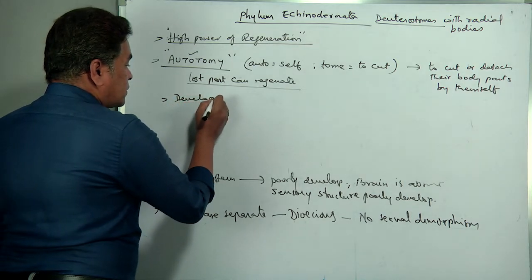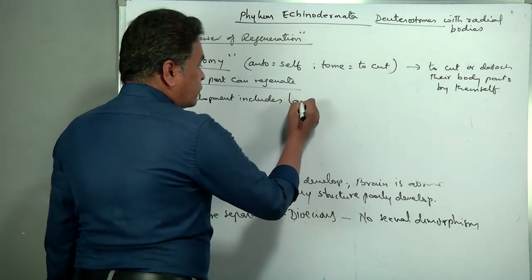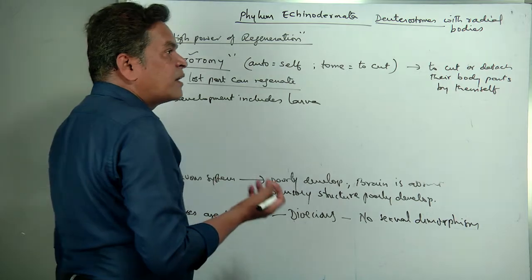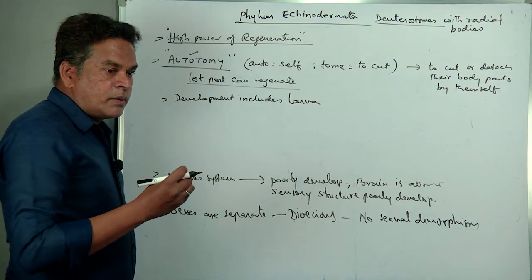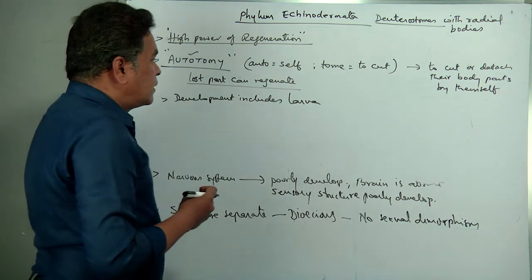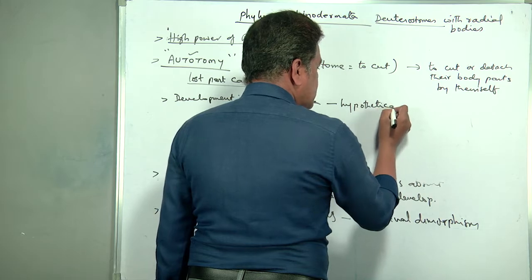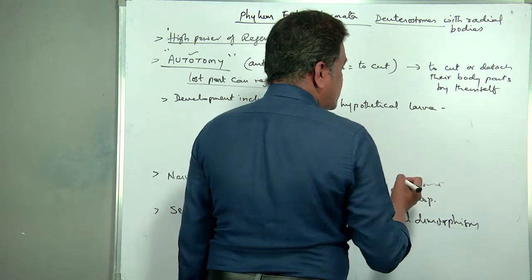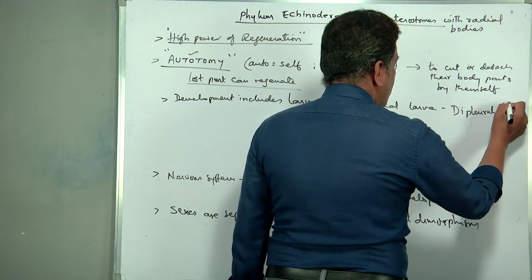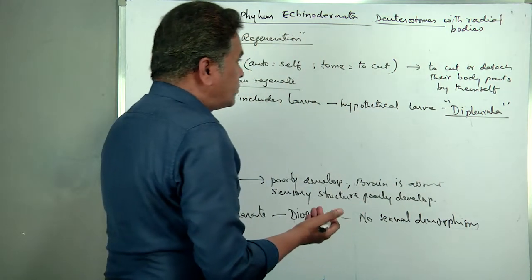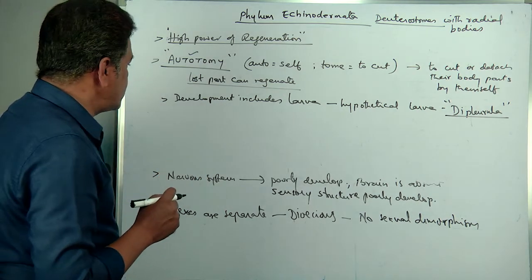Development includes a larva. You find many larvae in phylum Echinodermata, which we will discuss under classification. A hypothetical larva you need to remember is the dipleurula larva. Under the classes, we will specifically mention the different larvae under different classes.